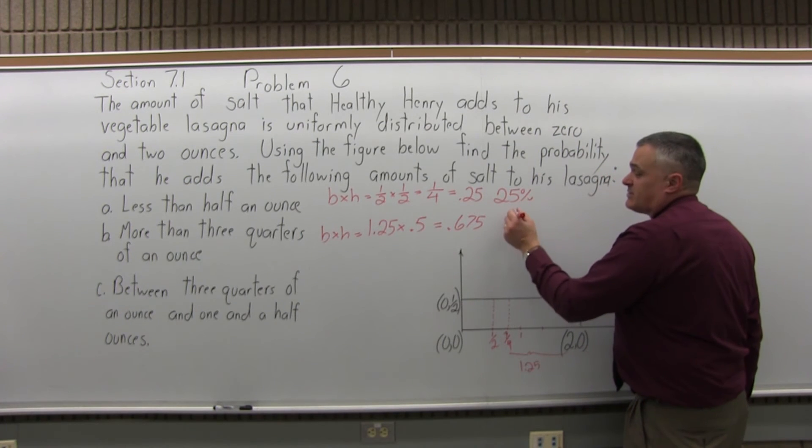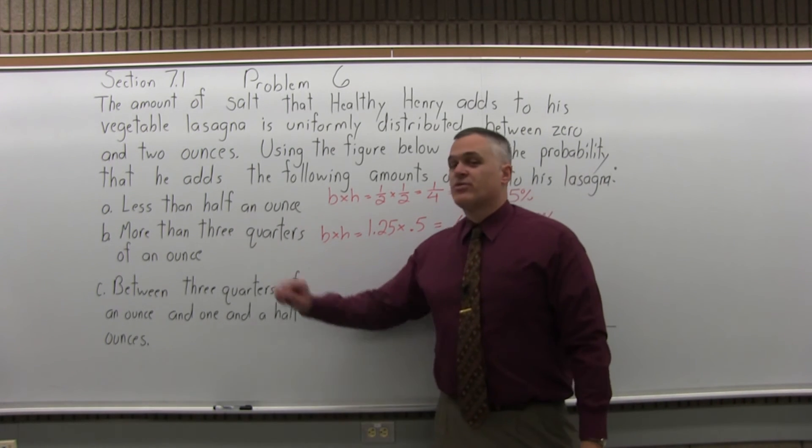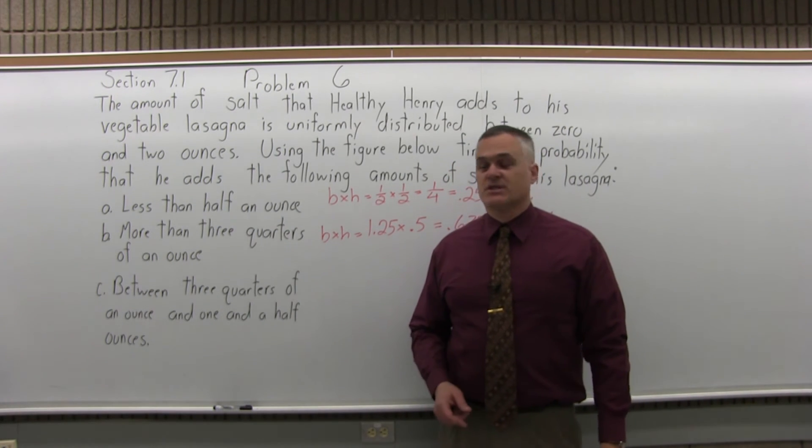And that's almost 68% probability, 67 and a half percent probability that Healthy Henry will add more than 3 quarters of an ounce of salt to his vegetable lasagna.